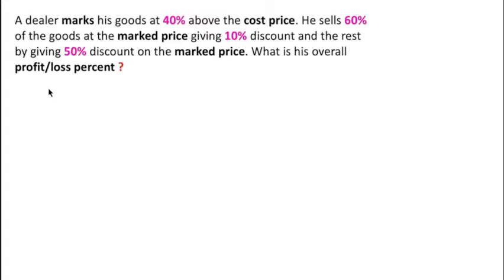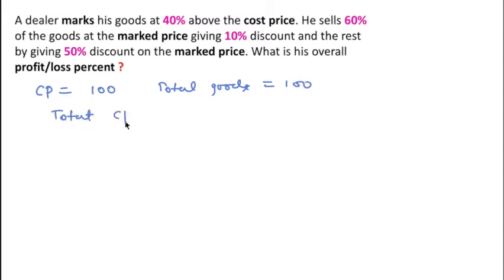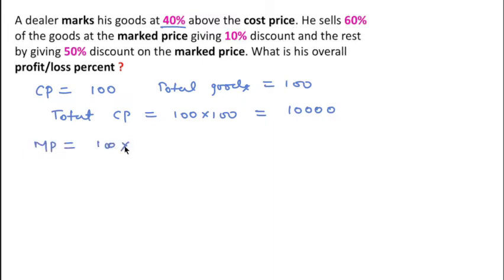To solve this question, I will first consider the cost price of one good as 100, and total goods as 100. So total cost price will be 100 into 100. The mark price of one good, after increasing 40% on cost price, will be 100 into 140%, which means mark price of one good is 140.